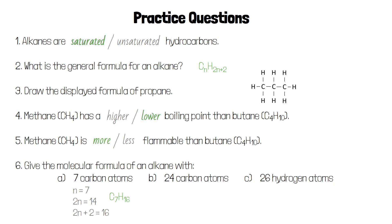For an alkane with 24 carbon atoms, N is 24, so 2N is 48 and 2N+2 would be 50. That means an alkane with 24 carbon atoms will have the molecular formula C12H26.